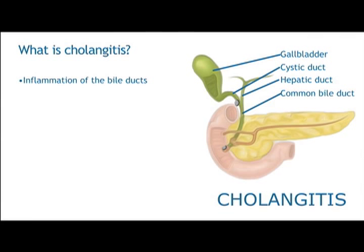Cholangitis refers to inflammation of the bile duct. A gallstone or a number of stones may pass from the gallbladder into the main common bile duct and become lodged, obstructing flow of bile from the liver to the intestine. This results in a buildup of bile behind the blockage.